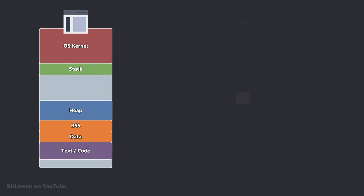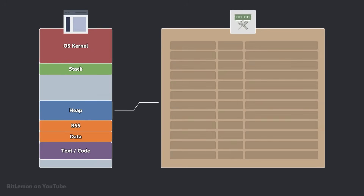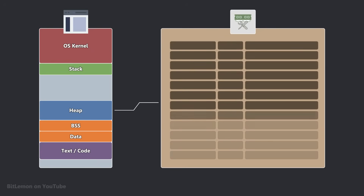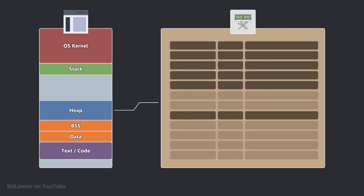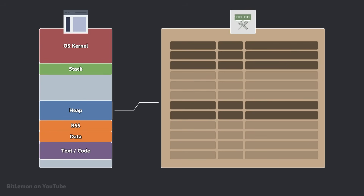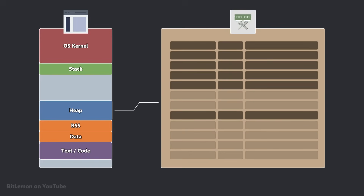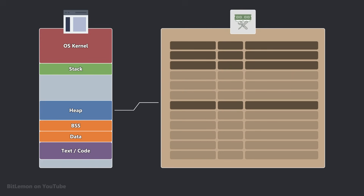The heap, on the other hand, uses a memory allocator, which must find a suitable free memory block, update internal data structures, and return a pointer to the address of the allocated memory. This process takes much longer than adjusting a single pointer.